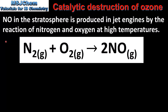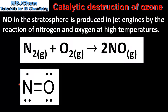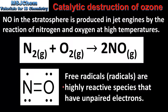Starting with nitrogen monoxide: nitrogen monoxide in the stratosphere is produced in jet engines by the reaction of nitrogen and oxygen at high temperatures. Here we can see the Lewis structure of nitrogen monoxide. If we look at the nitrogen atom we can see that it has an unpaired electron, which makes nitrogen monoxide a free radical. Free radicals are highly reactive species that have unpaired electrons, and because of these unpaired electrons free radicals are able to catalyze the destruction of ozone.